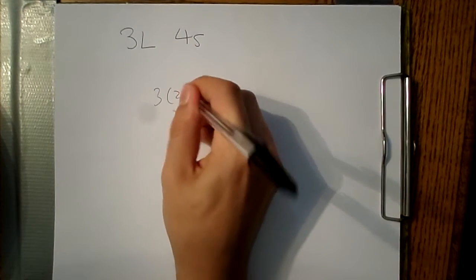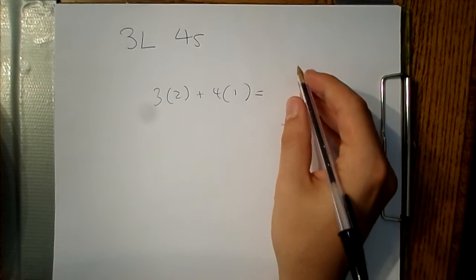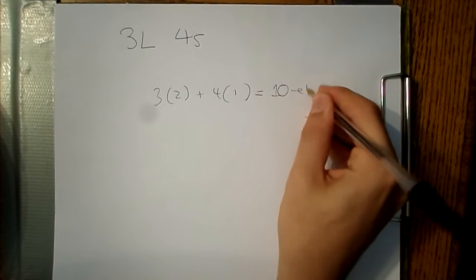Now, let's try a scale that doesn't exist in 12 equal, like 3L4S. If I plug in 1s for S and 2s for L, I can see that the smallest equal tuning that can play a 3L4S scale is 10 equal. Cool!